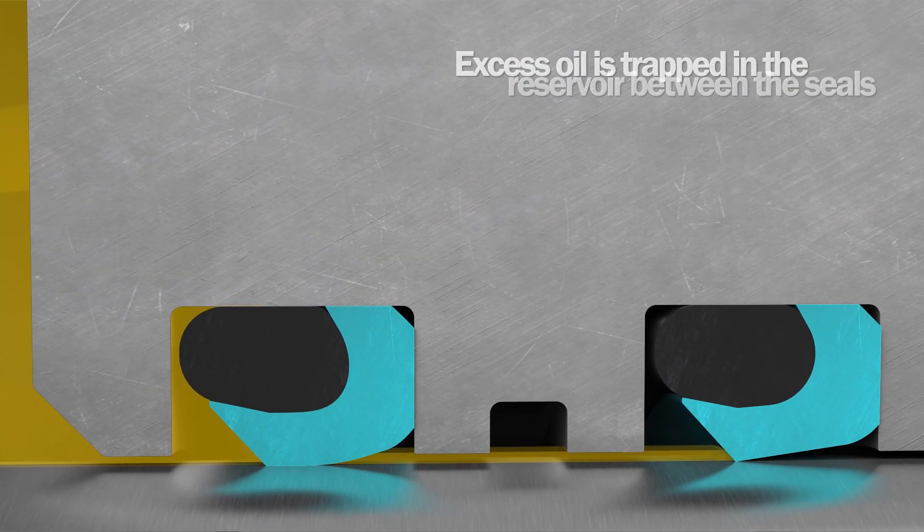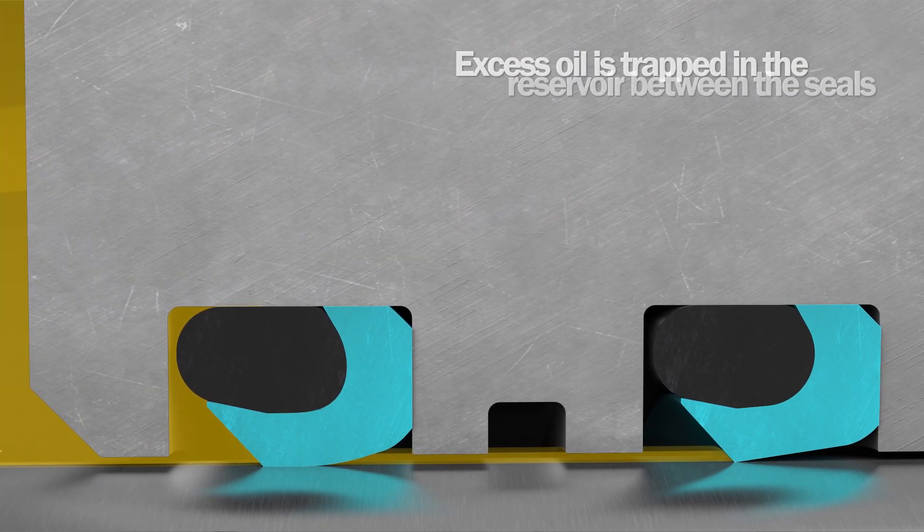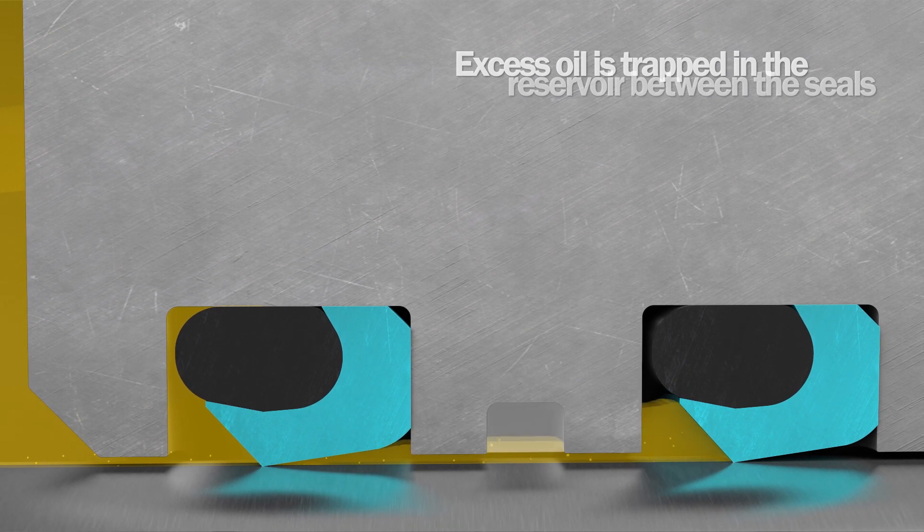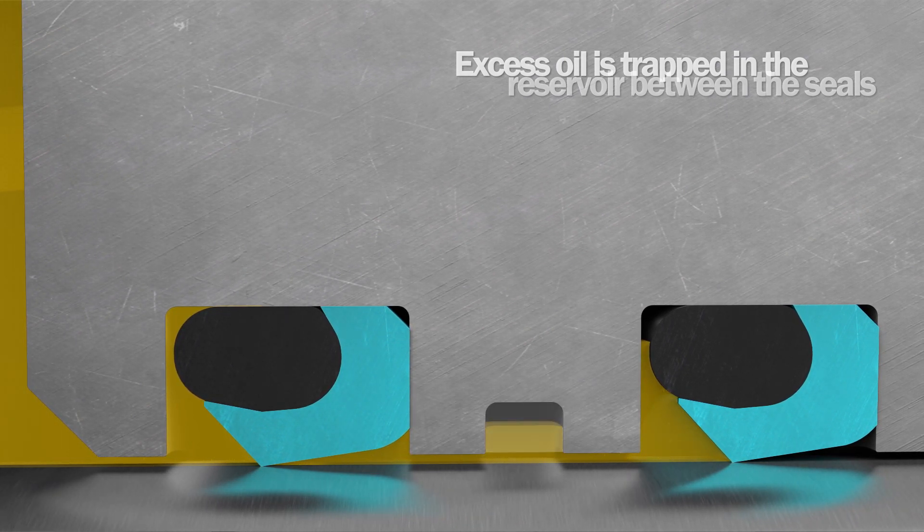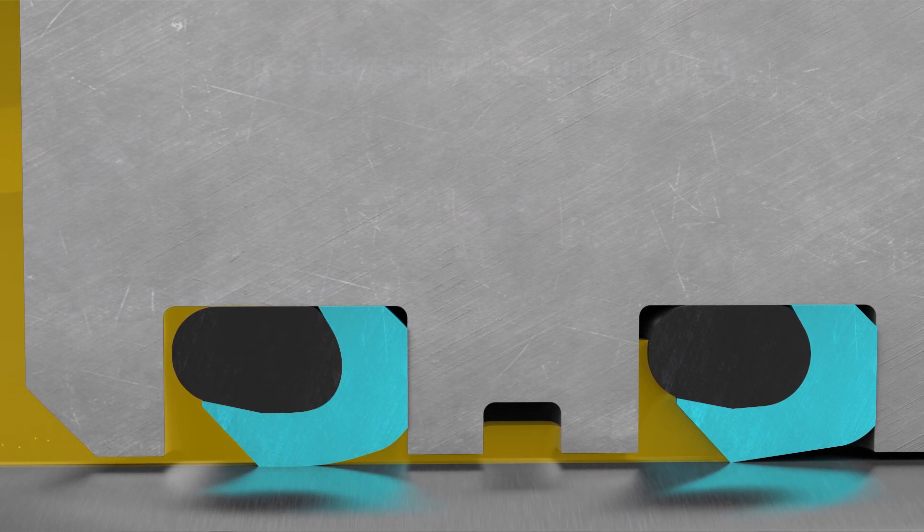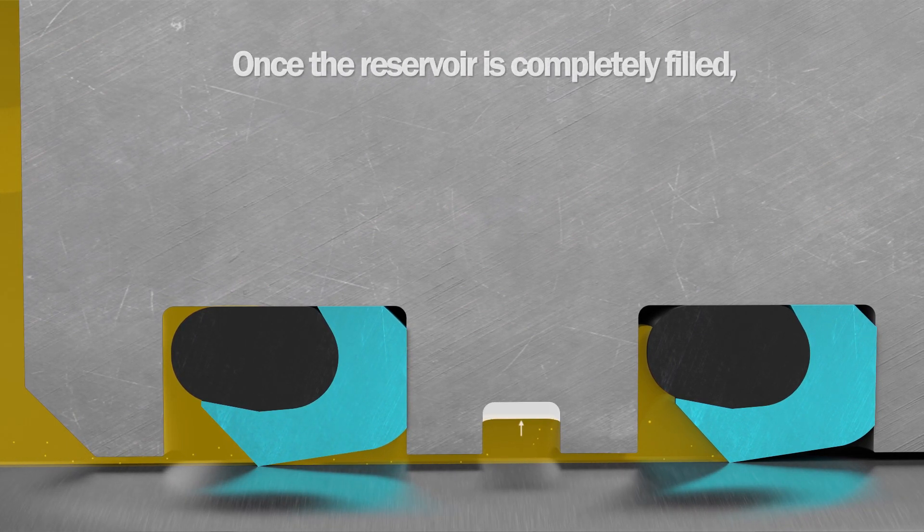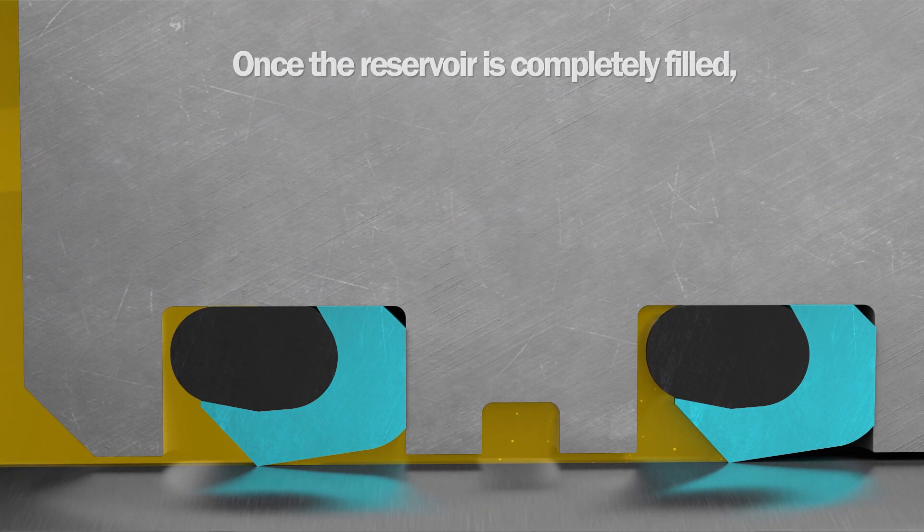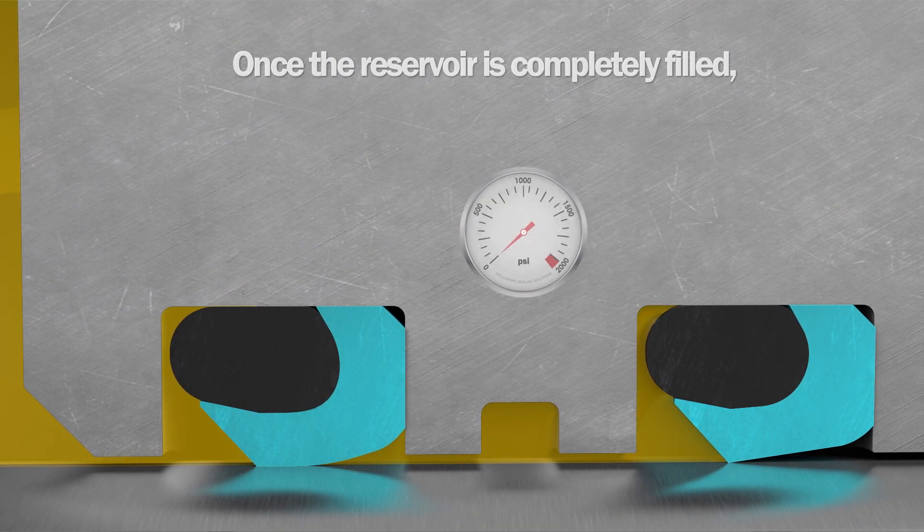Any additional oil is trapped in a reservoir between the seals. With the reservoir filled, pressure between the primary and secondary seals increases.